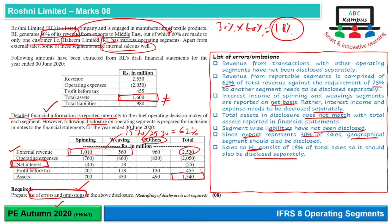Iske baad is disclosure note mein notice karo ki depreciation aur amortization ko disclose nahi kiya gaya. Requirement hai ki depreciation, amortization, aur other non-cash material items jo hai wo disclose hone chahiye. So wo disclose nahi hue, wo bhi hone chahiye.